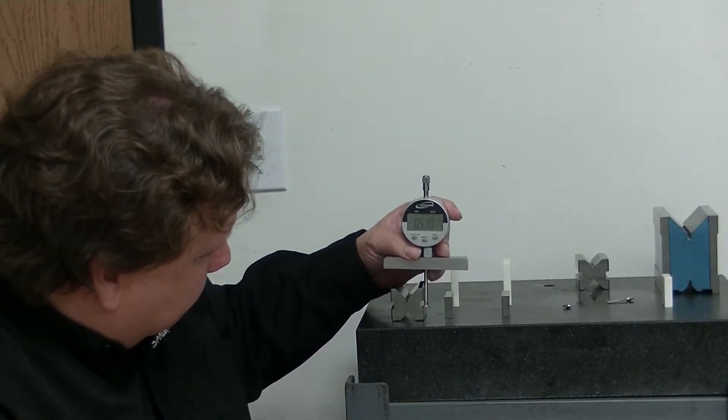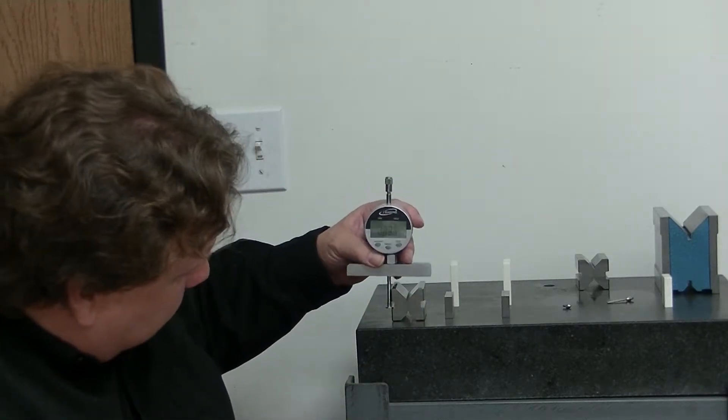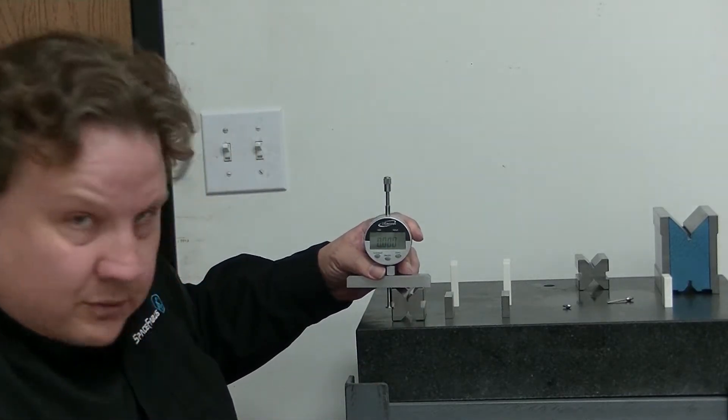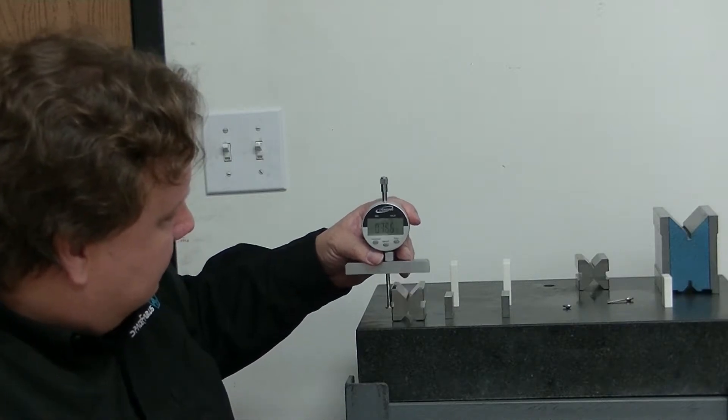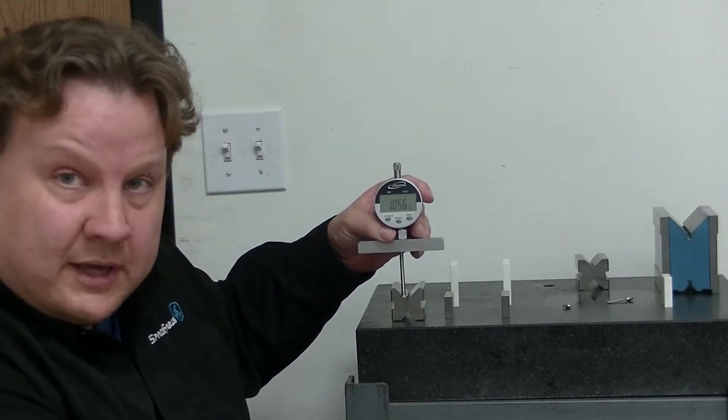And then I can measure other indents, like on this side here. And I still get zero on that side. So that's pretty handy if you need to get to a place that you can't reach.